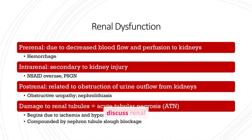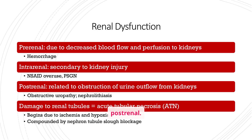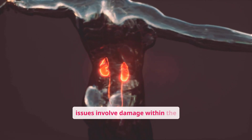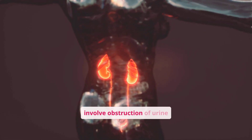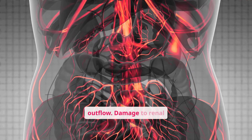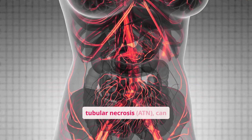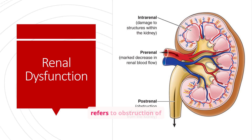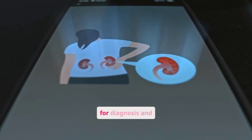Renal dysfunction can be categorized as pre-renal, intra-renal, or post-renal. Pre-renal issues involve decreased blood flow to the kidneys. Intra-renal issues involve damage within the kidneys themselves. Post-renal issues involve obstruction of urine outflow. Damage to renal tubules, also known as acute tubular necrosis or ATN, can also cause renal dysfunction. This diagram visually represents the different types of renal dysfunction. Understanding these distinctions is crucial for diagnosis and treatment.